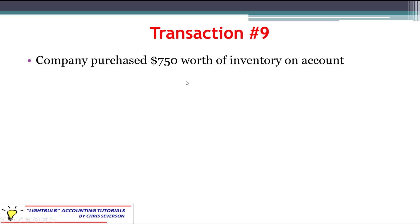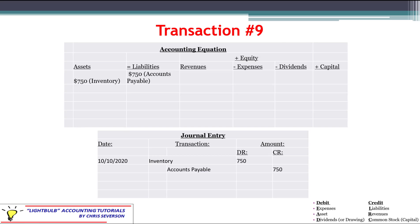Transaction number nine: the company purchased $750 worth of inventory on account — meaning no cash is paid right away. Inventory is an asset being increased by $750, and accounts payable as a liability is also increased by $750. Inventory has a normal debit balance, so we debit it to increase it. Accounts payable has a normal credit balance, so we credit accounts payable to increase it. We are still in balance.